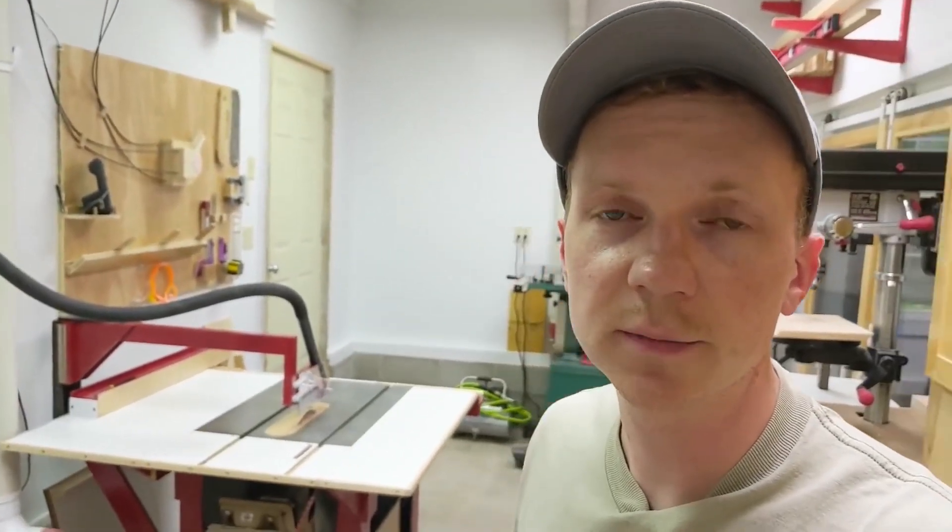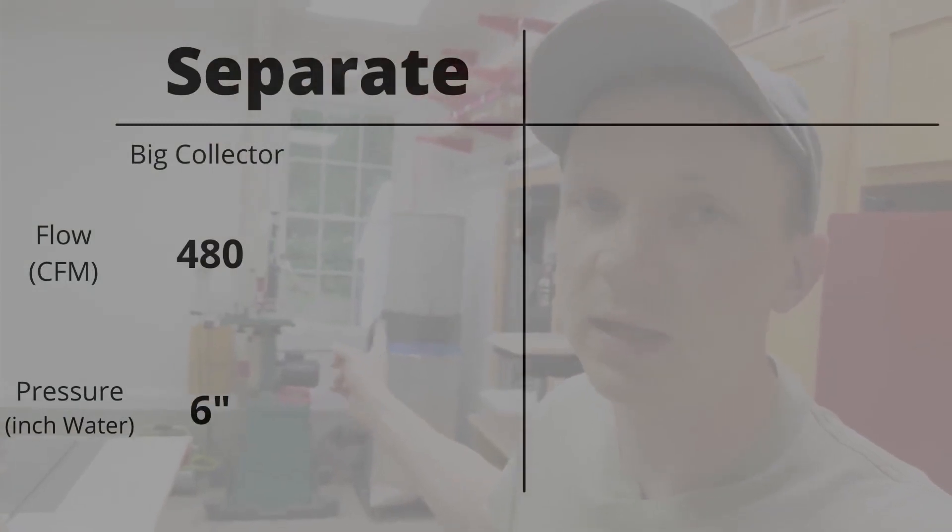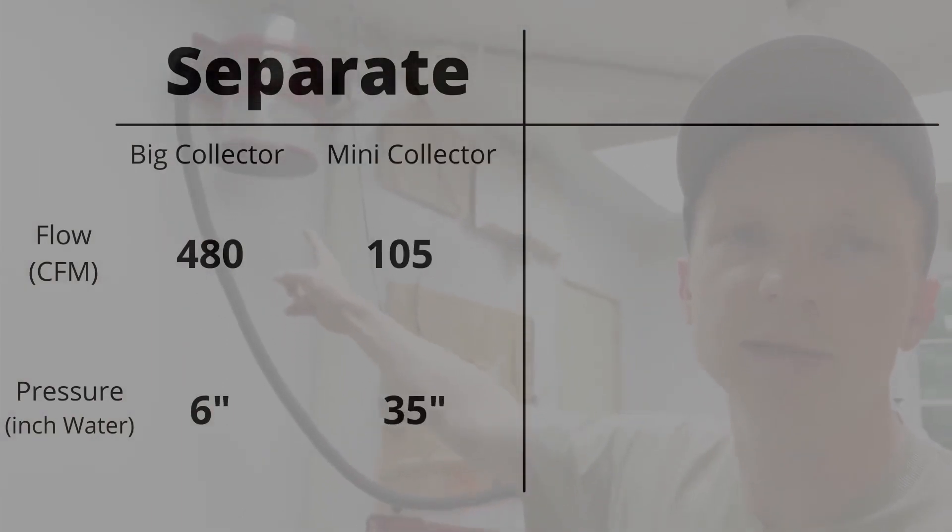So what did we learn from that testing? Well, we confirmed that the main big dust collector is a high volume but pretty low pressure dust collector. And we also confirmed that the mini dust collector is a very high pressure but pretty low volume dust collector.